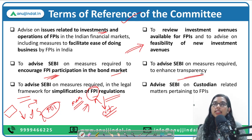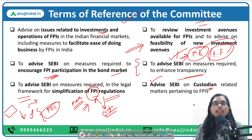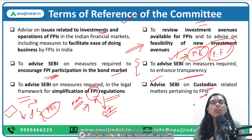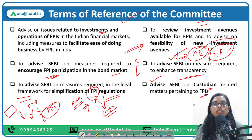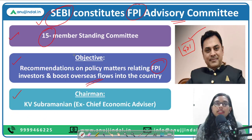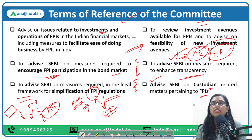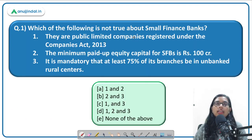The committee will also advise on enhancing transparency regarding the source of FPI money — whether it is related to money laundering or terror financing. Lastly, it will advise on who will act as custodian in matters relating to FPI. Key exam points: the committee has 15 members, was formed by SEBI, is chaired by KV Subramanian, and covers these specific terms of reference.